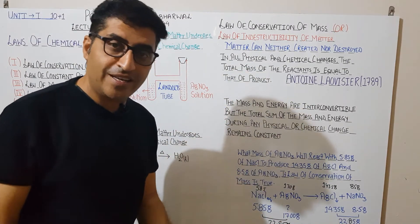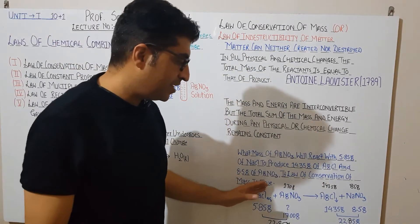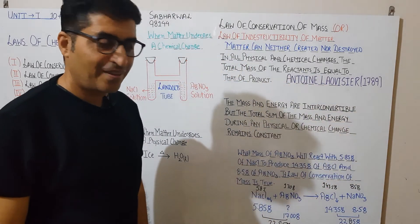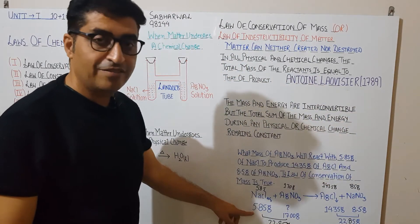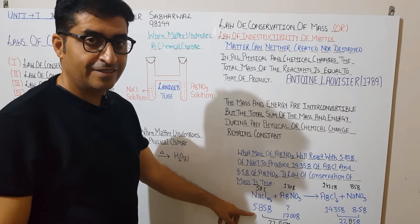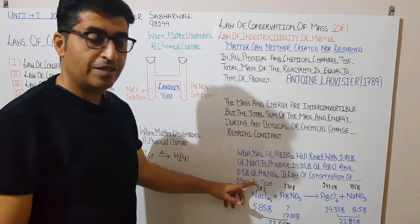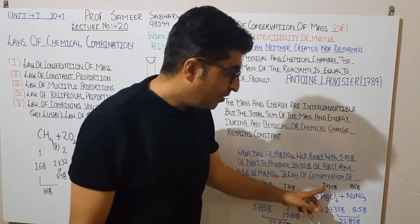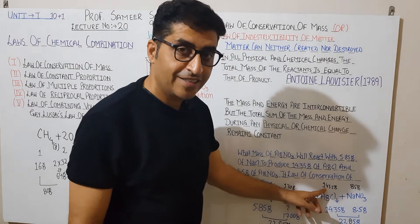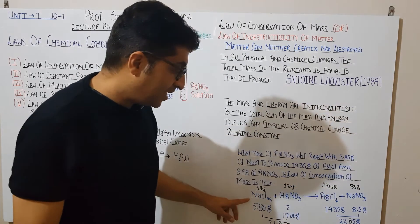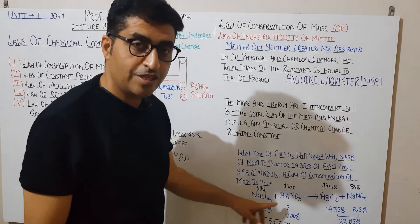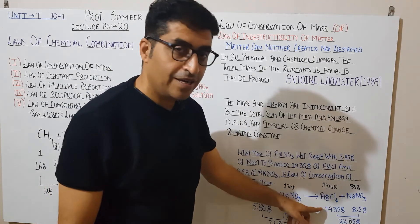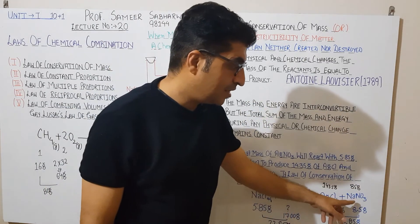Now let's check the molar proportions. We used 5.85 grams of NaCl, which is 0.1 moles (5.85 ÷ 58.5). Since the molar ratio is 1:1, we need 0.1 moles of AgNO3, which equals 0.1 × 170 = 17 grams of silver nitrate. This confirms the answer.